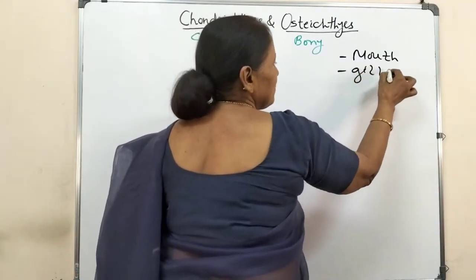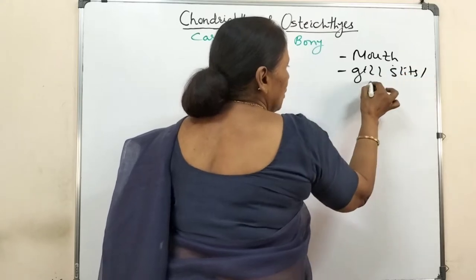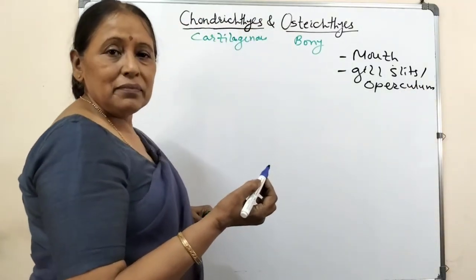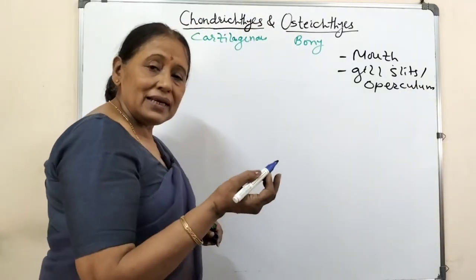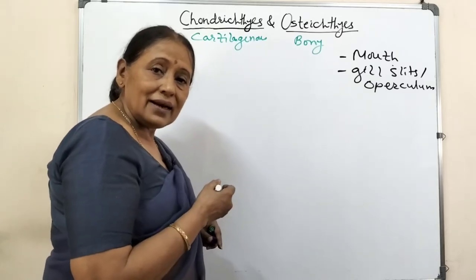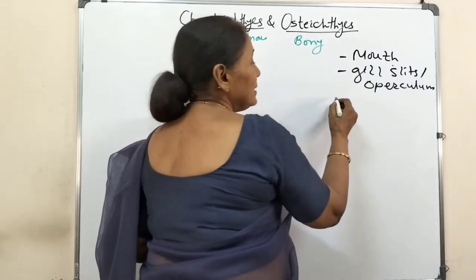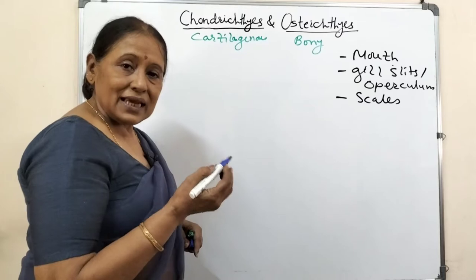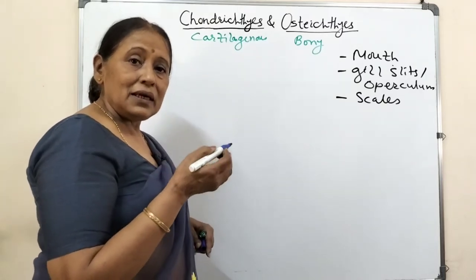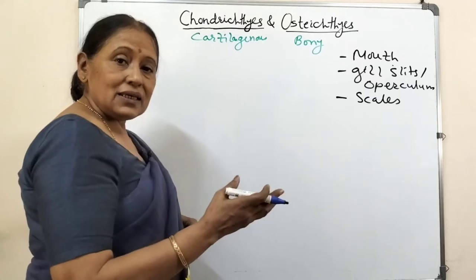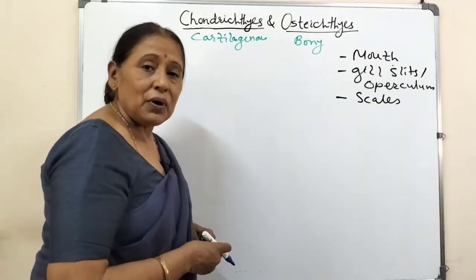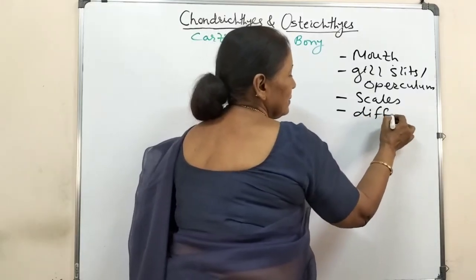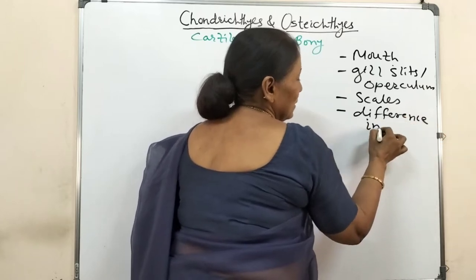Then there are the gill slits and the operculum. What is a gill slit? What is an operculum? Do both of them have gill slits and operculum, or does one have gill slits and the other have an operculum? Then there are the scales - is the scale present in both Chondrichthyes and Osteichthyes? Are all scales the same type or is there a difference? Then there is also a difference in their tail.